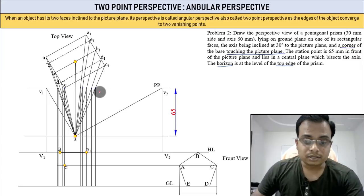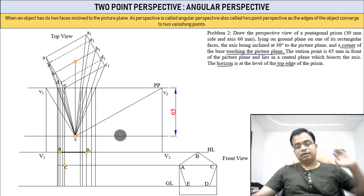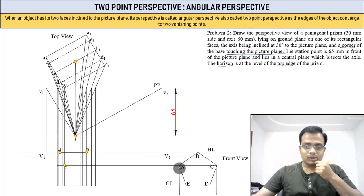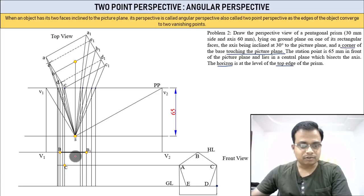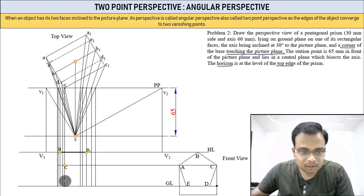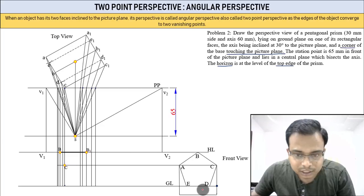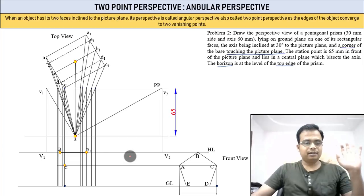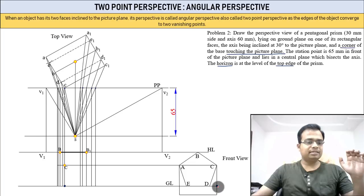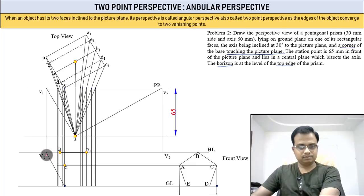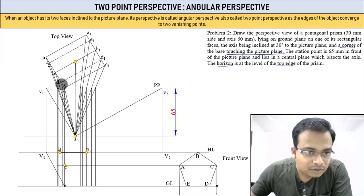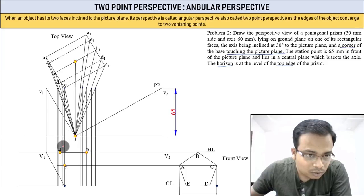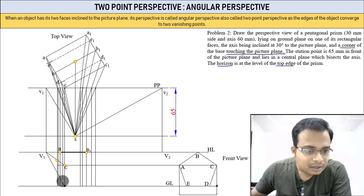Point B and B1 can be located next. B and B1 are at your eyesight level — that is, on the horizon line. B1's location is here and B's location is here. Join B with C. This point below C corresponds to a point in the perspective that vanishes toward V1.